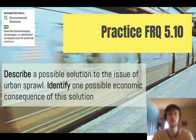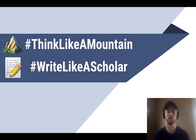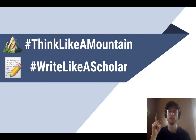Our suggested science skill practice for Q5.10 today is describing advantages, disadvantages, or unintended consequences of a solution. Describe a possible solution to urban sprawl, then identify one possible economic consequence of that solution. Thanks for tuning in — don't forget to like this video if it was helpful, subscribe for future APES video updates, and as always, think like a mountain, write like a scholar.